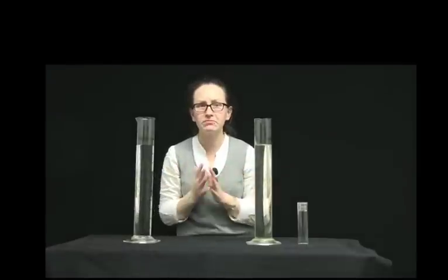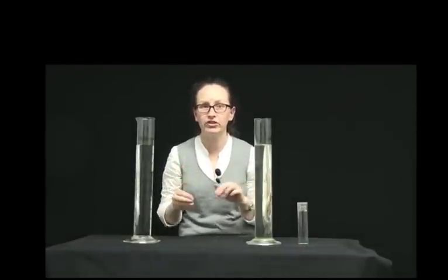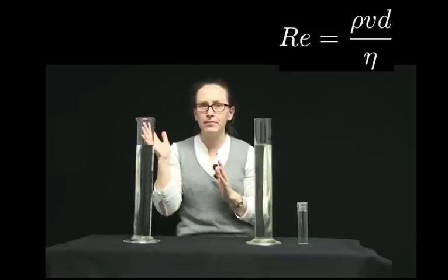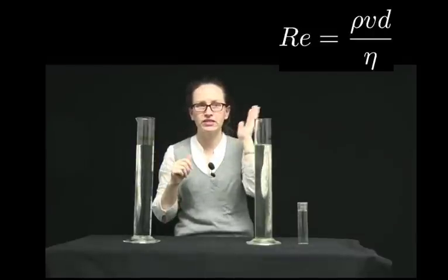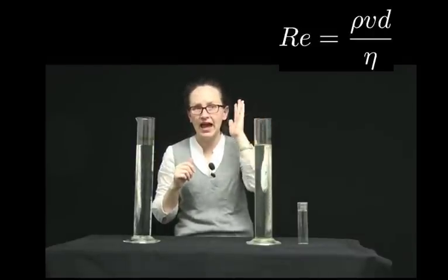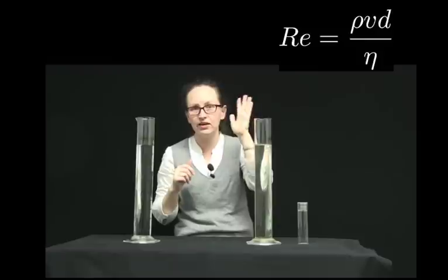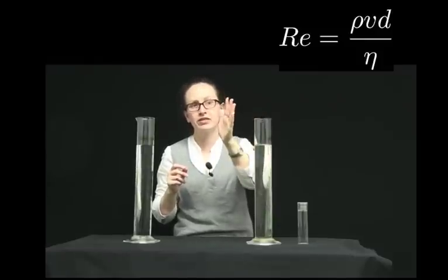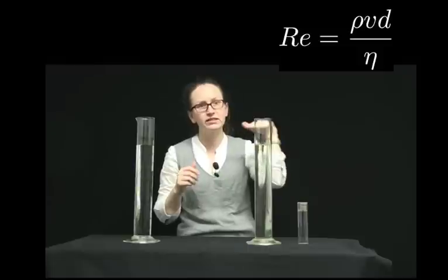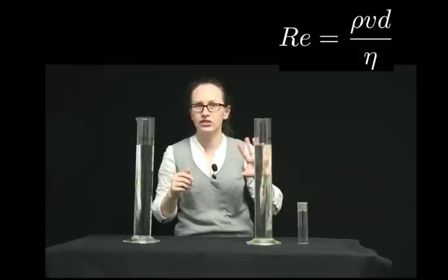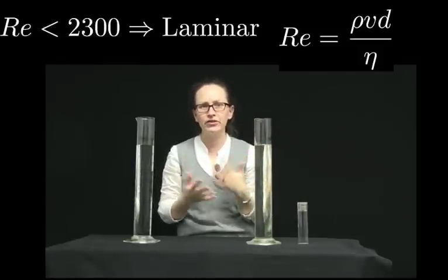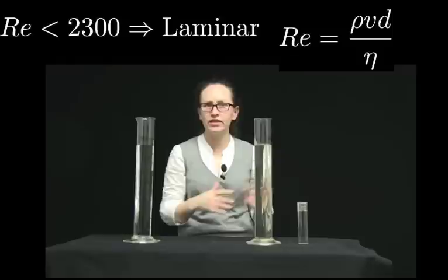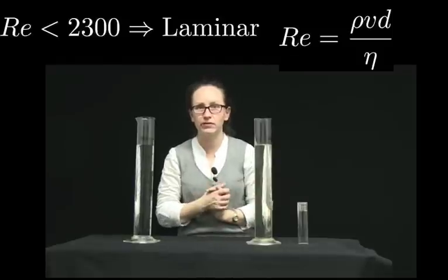So Osborne Reynolds managed to describe this quantitatively. He came up with an equation: the Reynolds number is equal to the density of the fluid times the average velocity of the particles in the fluid times the diameter of the pipe, divided by the viscosity.